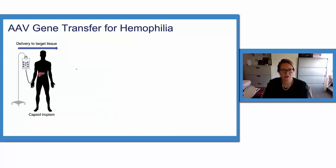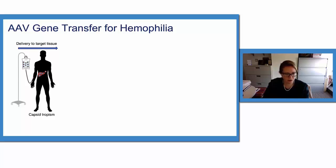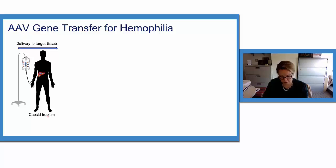The nuts and bolts of how AAV gene transfer works for hemophilia A: the vector is administered by a peripheral intravenous infusion, and we're targeting the liver. Tissue-specific tropism is thought to be imparted by the capsid serotype employed. Thankfully, the majority of AAV vectors naturally target the liver.